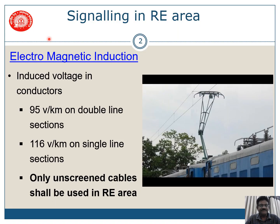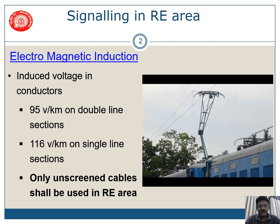The induced voltage in conductors, as we have seen in Part 1, is 95 volts per kilometer on double line sections and 116 volts per kilometer on single line sections. As we have already seen, only unscreened cables shall be used in RE area. In unscreened cables, even though earthing of cable armor is not proper, we should not have any unsafe condition in our signaling system. To ensure that, we have to have some restrictions.